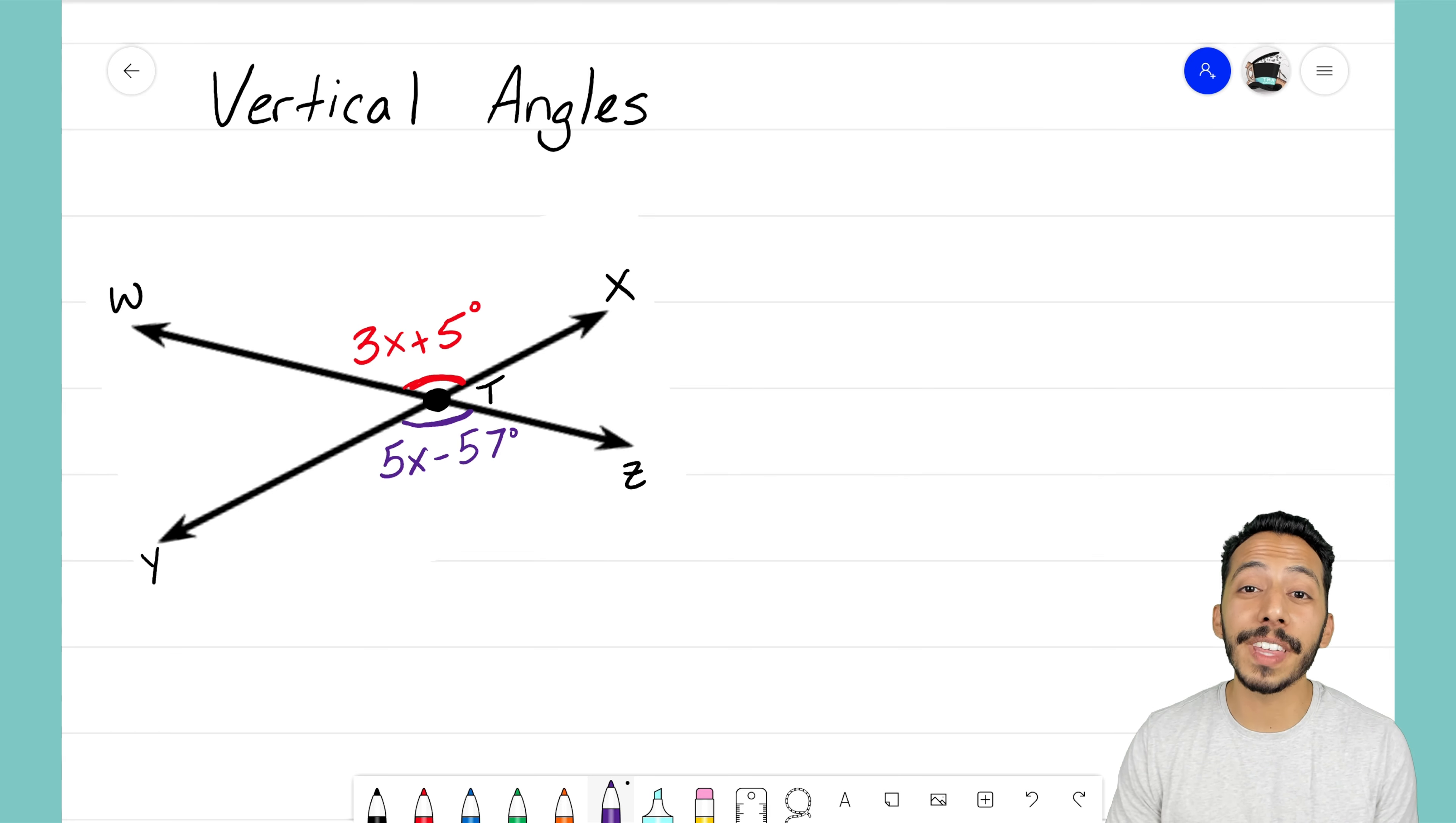Which then means that they have to be equal, so I can set up my equation now to solve for x. I know that that top angle 3x plus 5 degrees must equal the bottom angle which is 5x minus 57 degrees. We have an equation there with one variable, we can definitely use some algebra to solve for this missing variable.